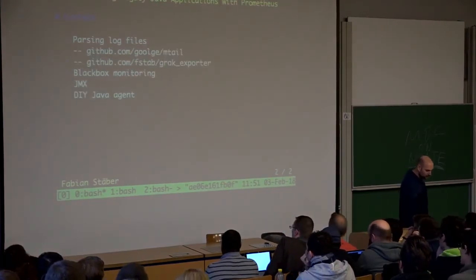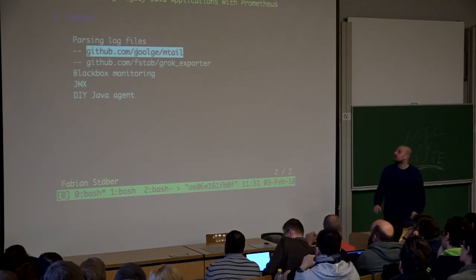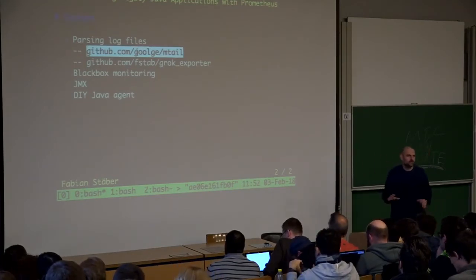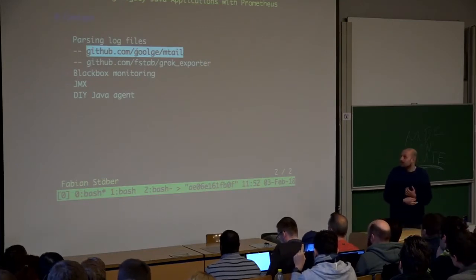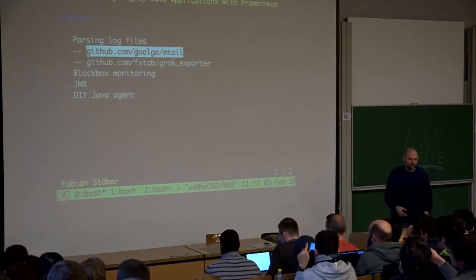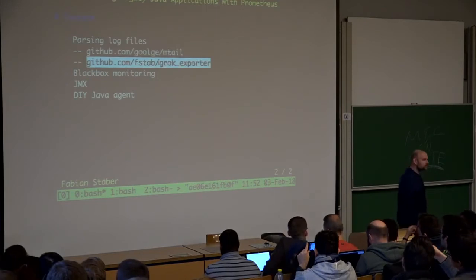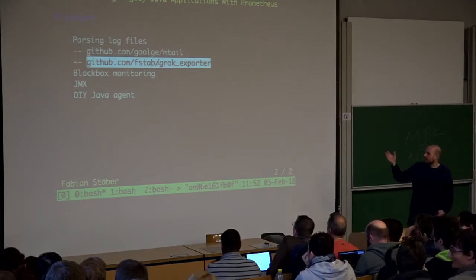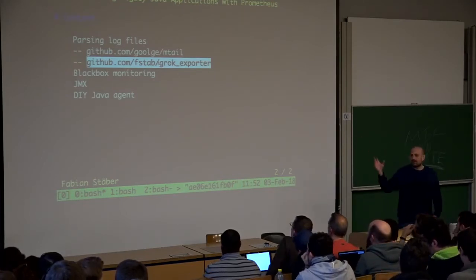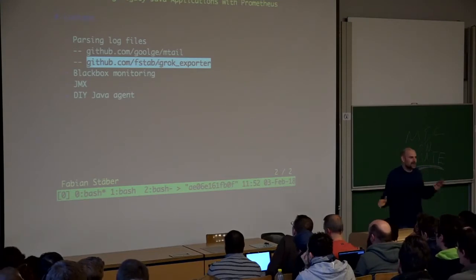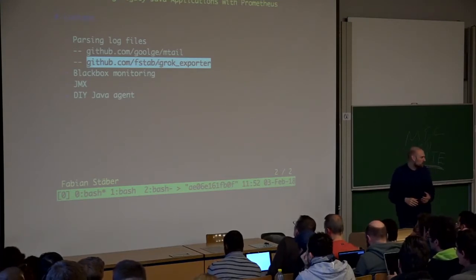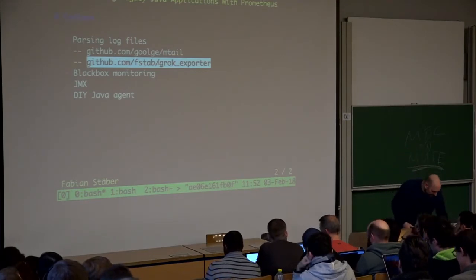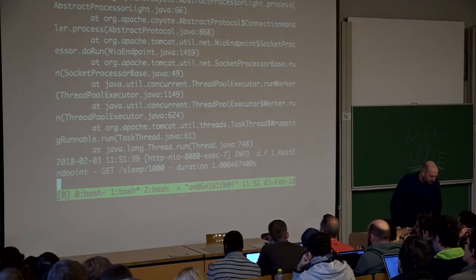First up is log file monitoring. There are a few tools available — the most popular one is by Google, called mtail, which is in the official Google repository. There are also small independent tools, for example the grok exporter, which I'm going to use in my demo. I'm also the author of grok exporter, but most of what I'll show applies generally to log file monitoring with Prometheus.